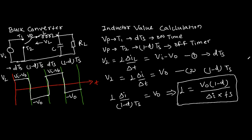In the case of the buck converter, the inductor value is L = V0 · (1−D) / (ΔI · Fs), where ΔI equals the inductor ripple current, which is typically 10 to 30% of your output current I0, and Fs is the switching frequency of your buck converter. That is how you can calculate the inductor value in the buck converter.